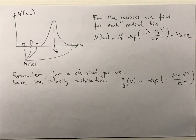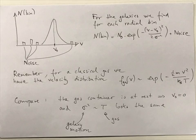This Gaussian shape we kind of know, because for a classical gas, the velocity distribution goes like the exponent of minus energy over temperature — something that goes like v-squared, normalized somehow. For the Coma galaxy cluster, the v-zero is something like 7,000 kilometers per second, but we have normalized it away. If you compare the expression for galaxy motion to the temperature in a gas, you see that the velocity dispersion — that is sigma-squared, the spread of the velocities of the galaxies — looks like the temperature of a gas.